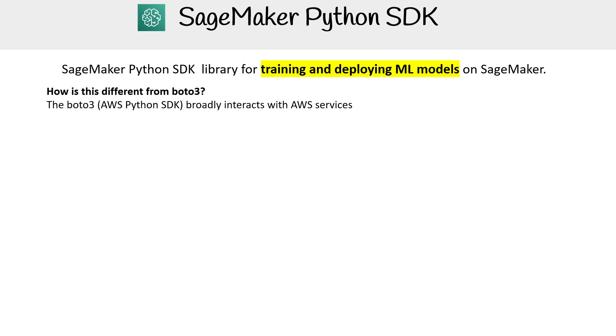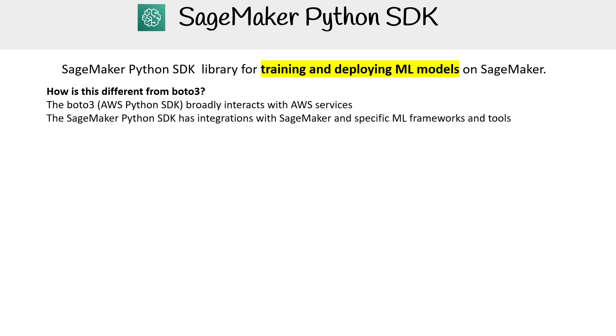How is it different from Boto3? Boto3 broadly interacts with AWS services, while the SageMaker Python SDK has integrations with SageMaker and specific machine learning tools.